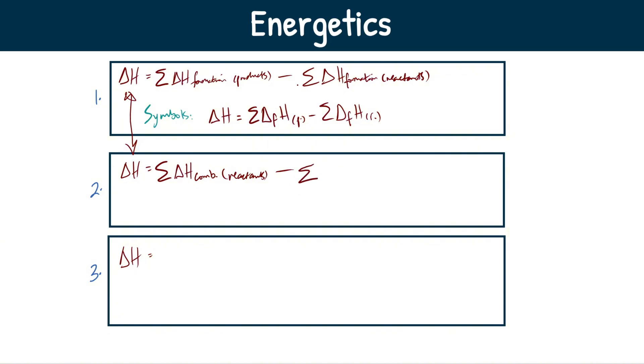This is the sum of enthalpy change of combustion of reactants. I'm going to do symbols again to speed it up for you guys. This is enthalpy change equals sum of enthalpy of combustion reactants minus sum of enthalpy of combustion products. See how similar they are, they're just flipped around.